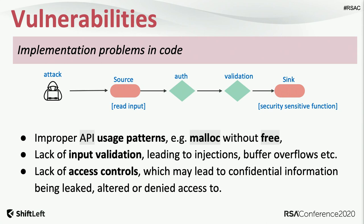Sources are the points where consumers and attackers interact with your system. Sinks are all exit points or re-entry points in your application. For example, if your application is interacting with a database and other microservices using an RPC protocol, those are sinks. Security-sensitive sinks include touching a file system or communicating over the network — things attackers can leverage during reconnaissance to privilege escalate. As good citizens, we apply authorization and validation between sources and sinks to ensure those interacting with our application are valid users.